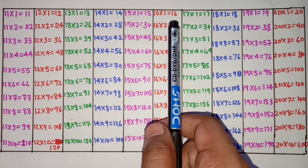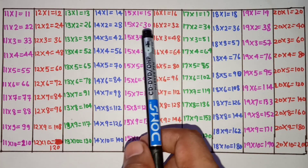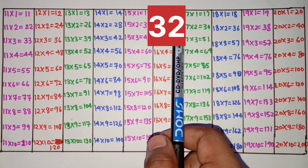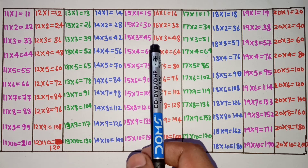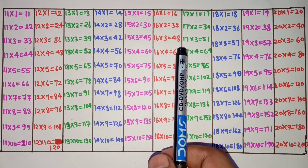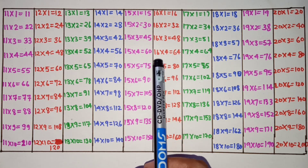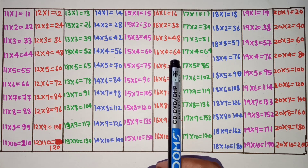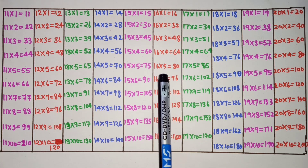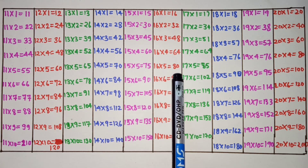16 1s are 16, 16 2s are 36, 16 3s are 48, 16 4s are 64, 16 5s are 80.